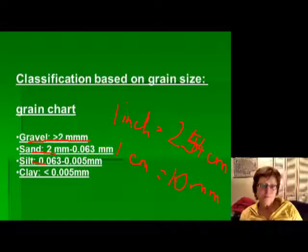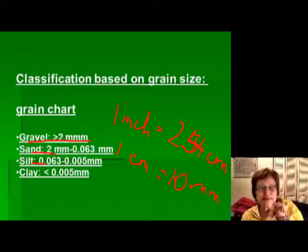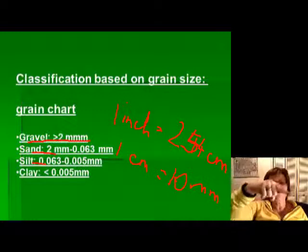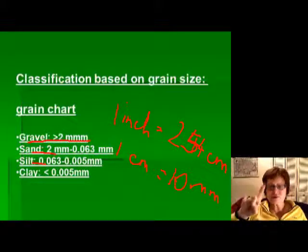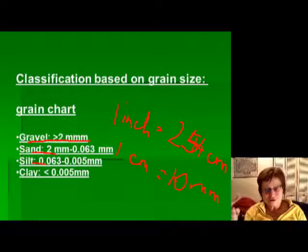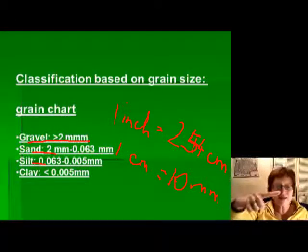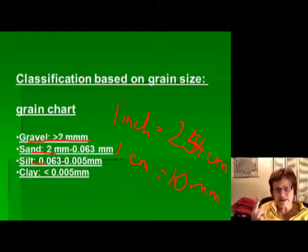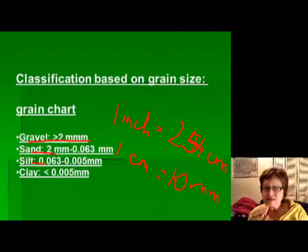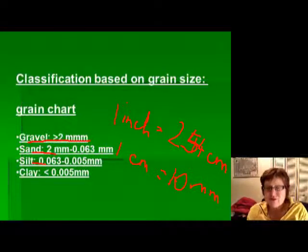The boundary between sand and silt at 0.063 mm might seem like a strange number, but in real life it was chosen because it matches the size of the lines on your finger. When you touch sandstone you can feel the grains — they're bigger than the lines on your finger. With siltstone, you won't feel individual grains; instead the grains fill the lines and your hand takes on the color of the rock. Clay feels silky and very fine-grained.